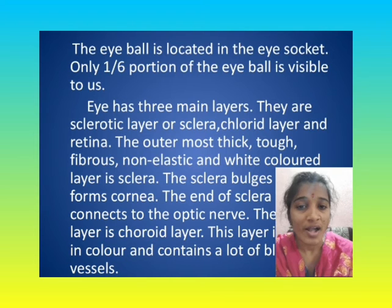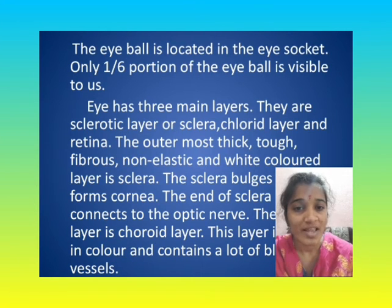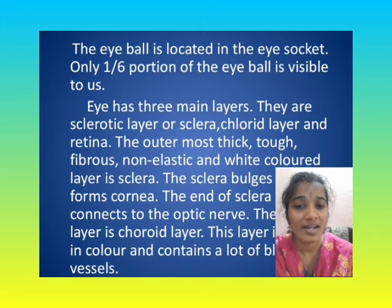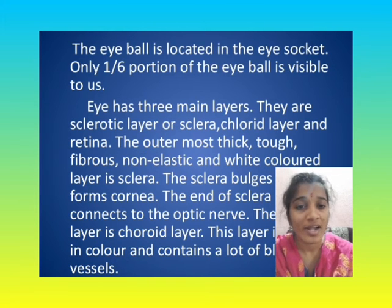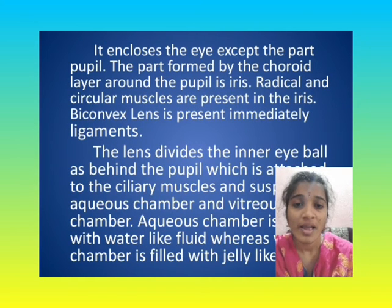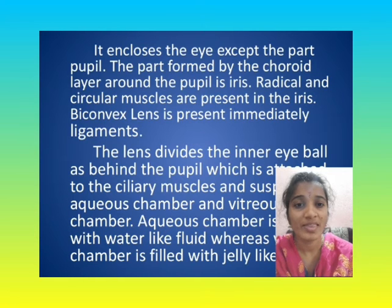The next layer is the choroid layer. This layer is black in color and contains a lot of blood vessels. It encloses the eye except for the part around the pupil.